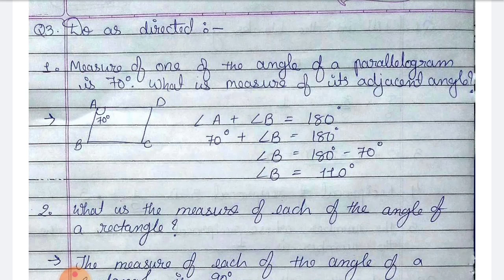We draw the figure. Angle A plus angle B is equal to 180 degrees — if we add two adjacent angles of a parallelogram, we get 180 degrees.